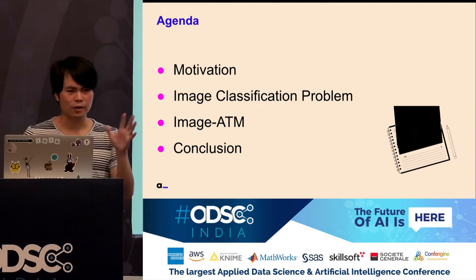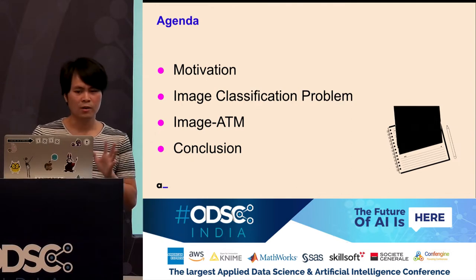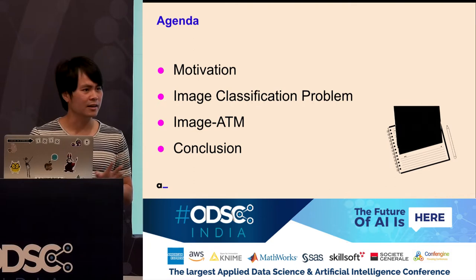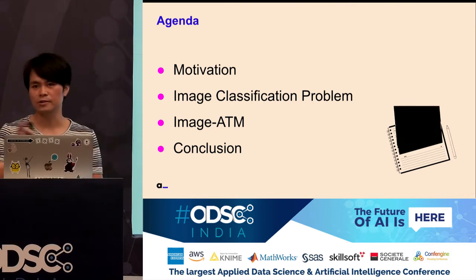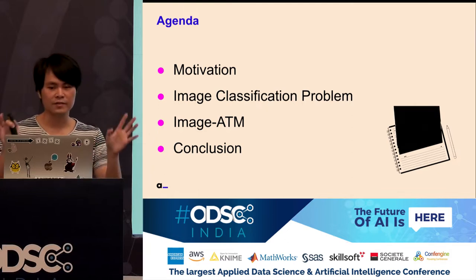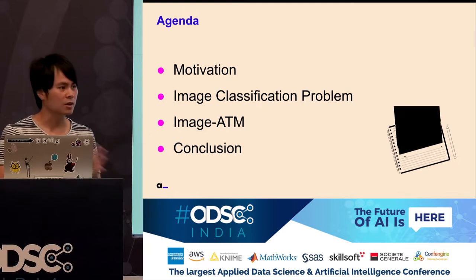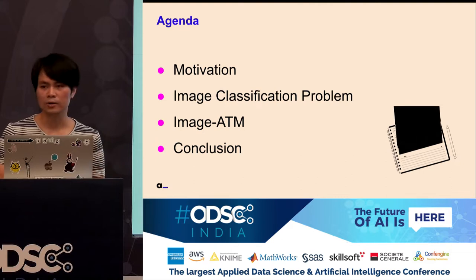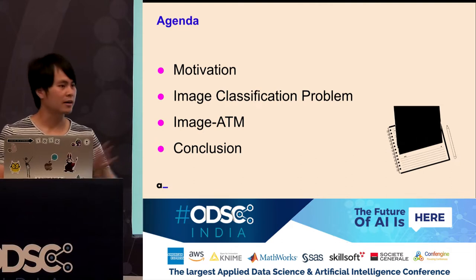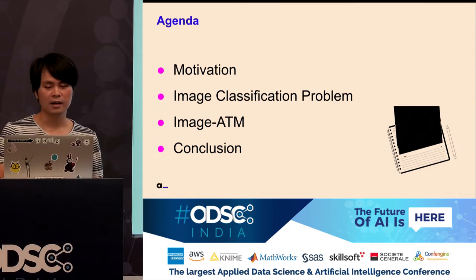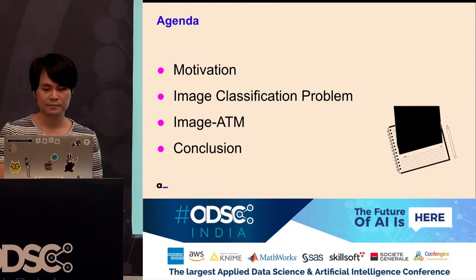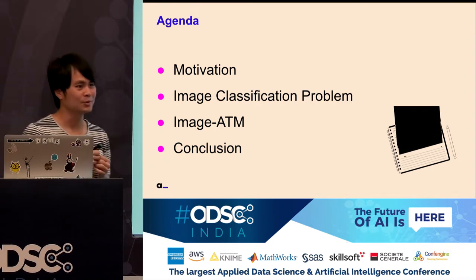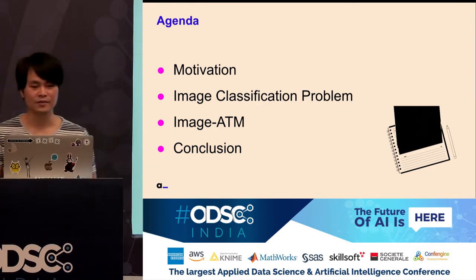Let's go to the general structure. First I'll give you a little motivation for why we needed to do this and why it was important for us. Then a short introduction to image classification. I'll talk about the library and show a little bit of code, and then conclude with a roadmap of our plans and how you can help support the library in the future.